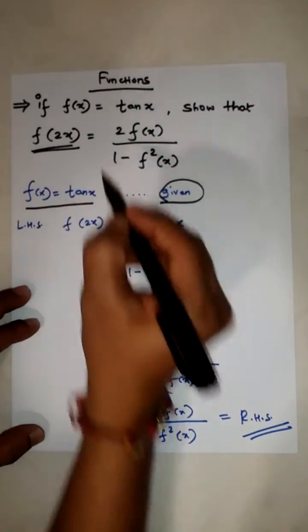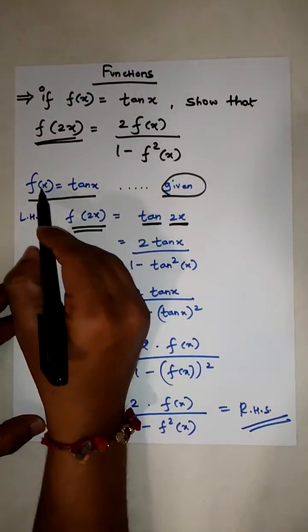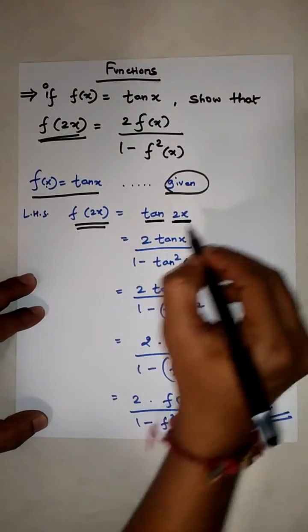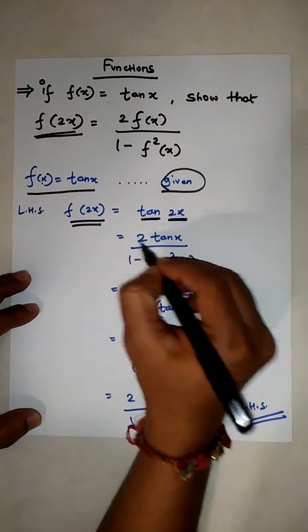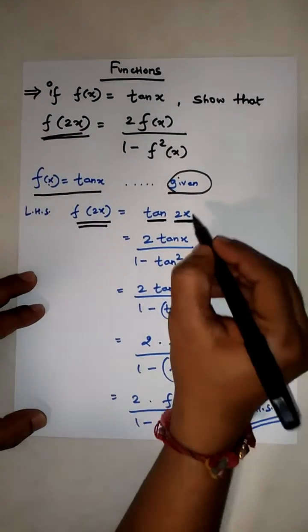f(2x) equals tan(2x). Instead of x, it will be 2x. Now we know the formula: tan(2a) is equal to 2tan(a) over 1 minus tan²(a). Based on this: